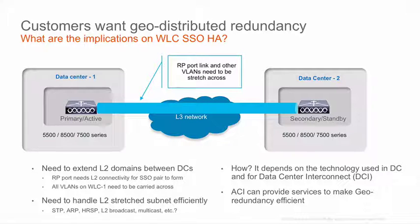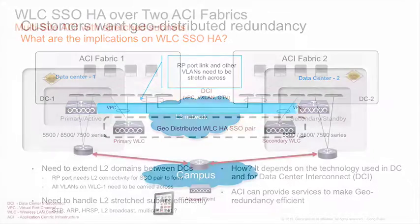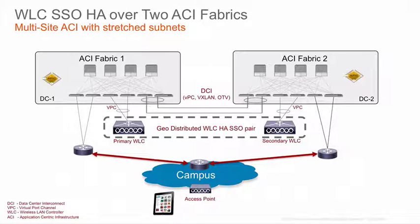There are multiple technologies that allow effective Layer 2 extension, especially when connecting two data centers — for example, OTV or VXLAN. We will leverage those, but we will also leverage the features that ACI has to stretch a subnet across an ACI fabric and across two different ACI fabrics in two different data centers.